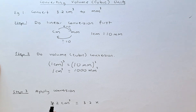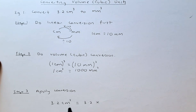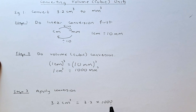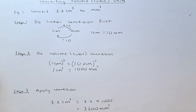So if you have 3.2 centimeter cube and you want to convert it into millimeter cube, you need to multiply 3.2 by 1000, because 1 centimeter cube is 1000 millimeter cube. So 3.2 times 1000 gives you 3200 millimeter cube. That's how you convert a centimeter cube to a millimeter cube.